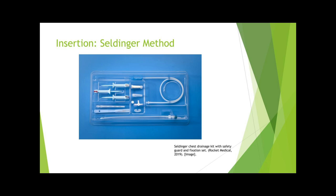A dilator can be introduced over the guide wire and advanced, used to dilate the entry tract by performing a twisting motion. The dilator can then be removed. The chest tube or chest tube inserter should then be passed over the wire into the pleural space. Once the chest tube is advanced, the guide wire and chest tube inserter can be removed, and the chest tube can be attached to the drainage system. Advantages of the Seldinger technique include a smaller incision, minimal tissue dissection, and less pain for the patient. Disadvantages include an inability to assess for the presence of adhesions between the lung and the pleural surface. After insertion, a chest x-ray should be ordered to confirm placement.